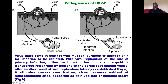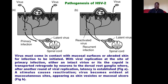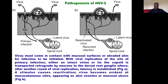The virus is taken retrograde by the neuron until it reaches the dorsal root ganglia in the spinal cord. There it undergoes another replication, and then the infection remains dormant at the dorsal root ganglia of the neuron. It will stay there until a trigger — such as HIV infection or any other reason for the immune system to decline — causes reactivation.